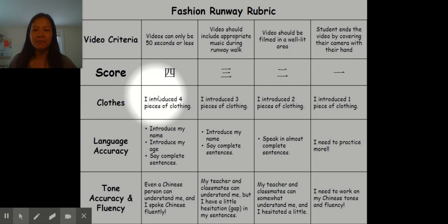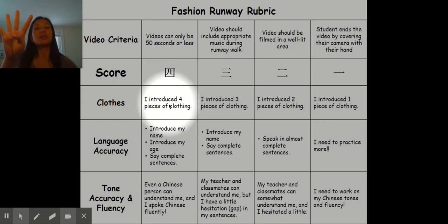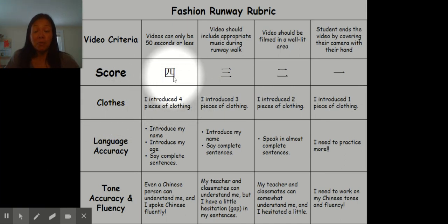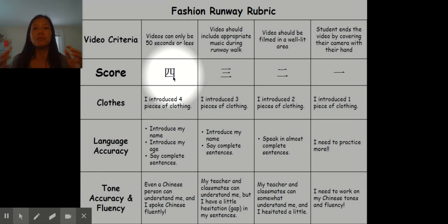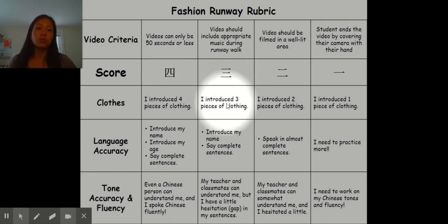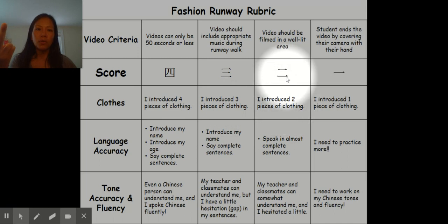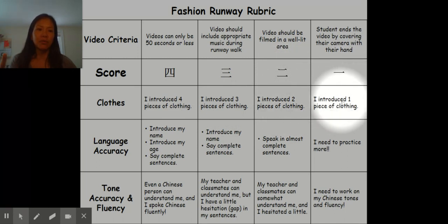So for your clothing: if you introduce four pieces of clothing, you get 四, which is the maximum amount of points. If you want to do more, by all means do more — just make sure you keep it under 50 seconds. Then 三 if you introduce three pieces of clothing, 二 for two, and 一 for one. So the more clothing you introduce, the more points you get.